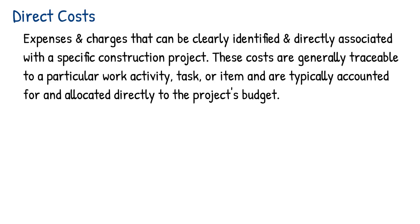Examples of direct costs in construction projects include materials — the cost of purchasing construction materials such as concrete, steel, timber, pipes, electrical wiring, fixtures, etc., that are specifically used for the project.